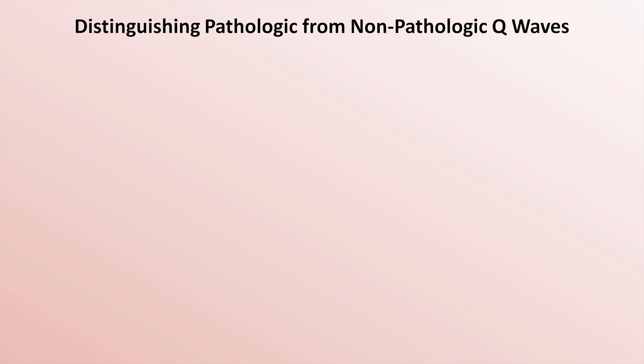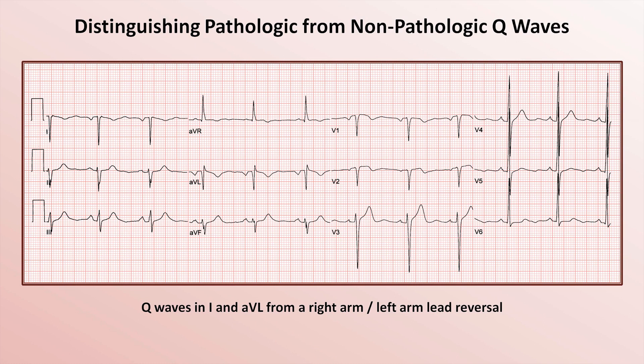In this EKG, there are pathologic Q-waves in leads 1 and AVL, which are not the consequence of true cardiac pathology but rather the consequence of the right arm and left arm wires being accidentally switched by the person recording the EKG.